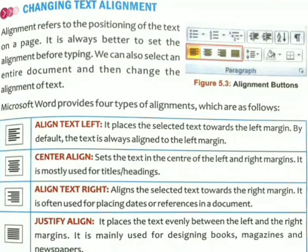Microsoft provides four types of alignment. Alignments are our text's position, which is displayed on our page. There is a better option to set the alignment before typing, but we can also set the alignment after typing our entire document and then change it.